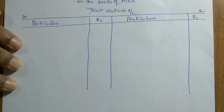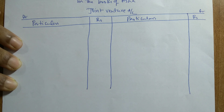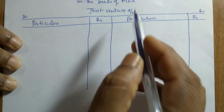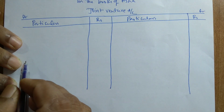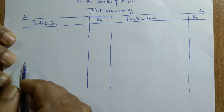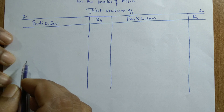Before solving this problem, let us understand the nature of the problem. In this problem, the joint venture account and Basha's account are prepared in the books of Asha. The expenditure incurred by both Asha and Basha should be considered while preparing the joint venture account.